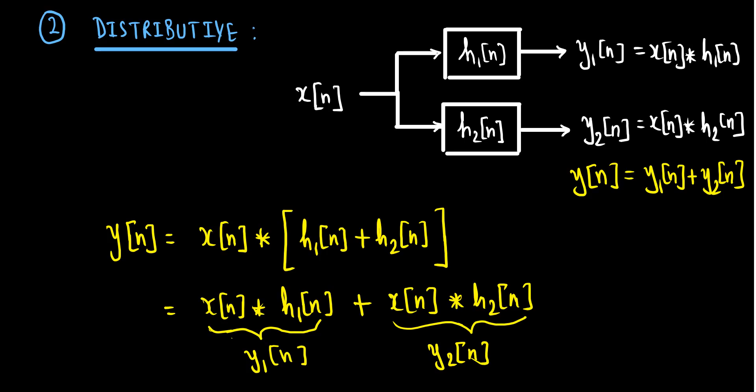In summary, if an input signal is fed to two different systems in parallel and we add their individual outputs, the result is equivalent to convolving the input signal with the sum of the impulse responses of those two systems. This property is called the distributive property of convolution.